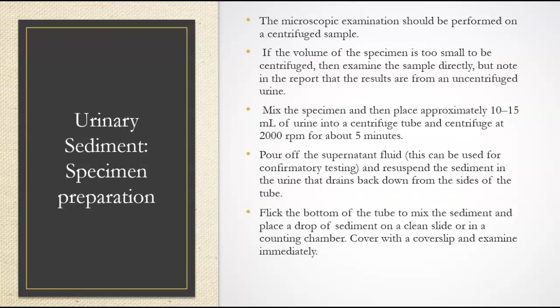We are going to do a microscopic on a centrifuged sample. If the volume is too small, we can try to centrifuge it or examine it directly, but we do have to make a note that it was an uncentrifuged urine simply because of the volume decrease. When we're looking for an ideal specimen, we need about a minimum of 10 mls of urine into a centrifuge tube, and we're going to centrifuge them at 2,000 RPMs for about five minutes. We save about an ml and resuspend the sediment in the urine.